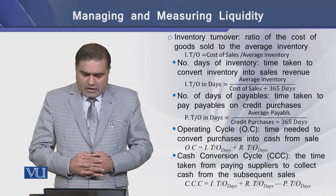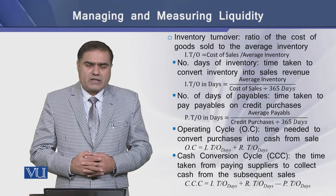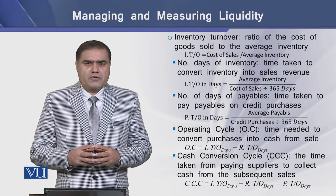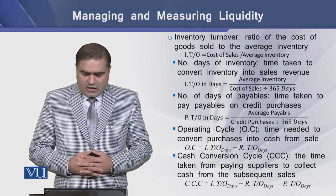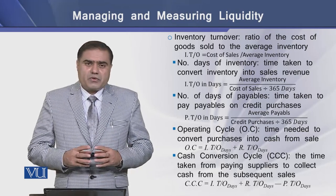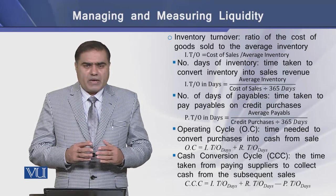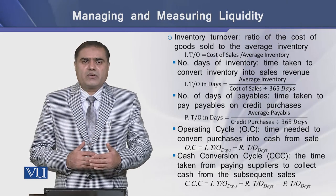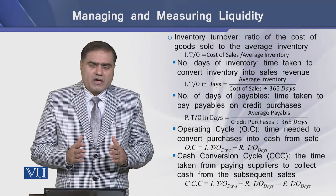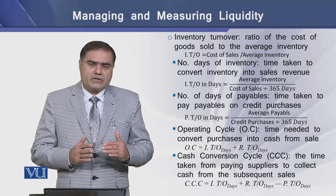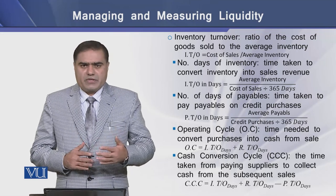The number of days of payables, or average payment period, is the ratio that tells how much time the firm takes to pay off its creditors. This ratio has an inverse relationship with the creditors turnover ratio. The creditors turnover ratio tells how many times a firm turns its purchases into an average inventory.